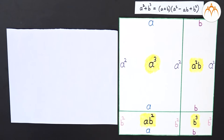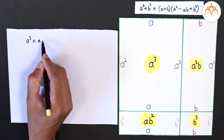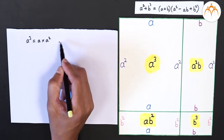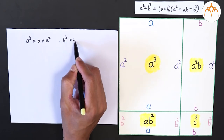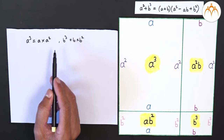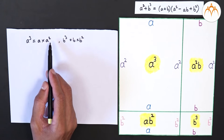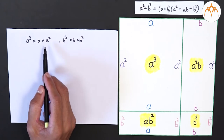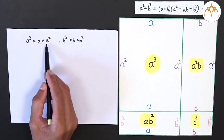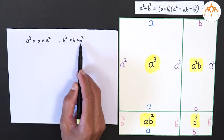Now, a cube plus b cube is the addition of two terms: one is a cube and another is b cube. We can think of a cube as a into a squared and similarly b cube as b into b squared. As we have written these cubes as multiplication of two terms, we can say that they represent the area of rectangles — one with sides a and a squared, and the other with sides b and b squared.